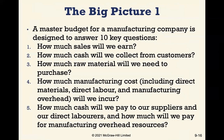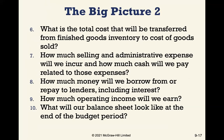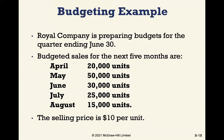The master budget for a manufacturing company is designed to answer ten key questions: How much sales will we earn? How much cash will we collect from customers? How much raw material do we need to purchase? How much manufacturing cost will we incur? How much cash will we pay to suppliers and direct laborers? How much will we pay for manufacturing overhead? What is the total cost transferred from finished goods to cost of goods sold? How much selling and administrative expense will we incur, and what cash will we pay for those? How much will we borrow or repay to lenders? And what will our balance sheet look like at the end of the period?